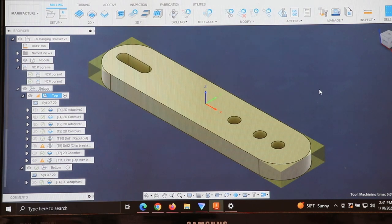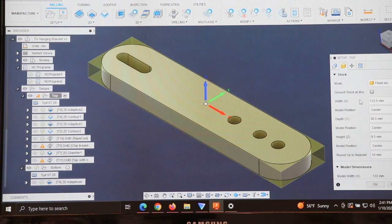Here is the bracket that I have designed. The stock is about 133.5 millimeters in width or in length, I guess you could say here, because that's the long and 30.5 millimeters in depth. And then the height of about 10 millimeters, 9.5 millimeters.